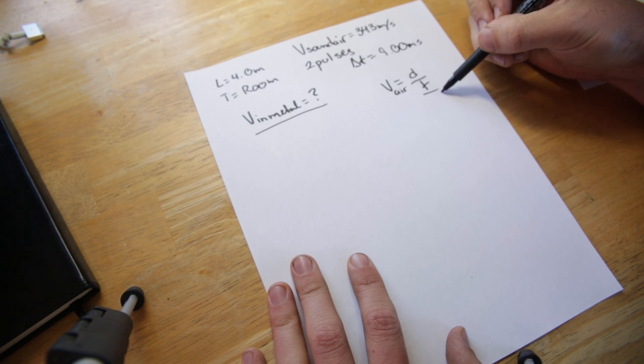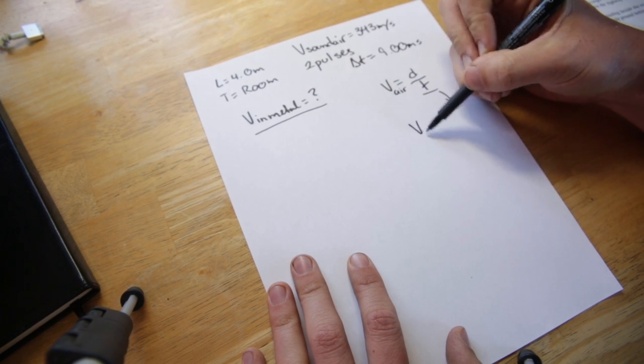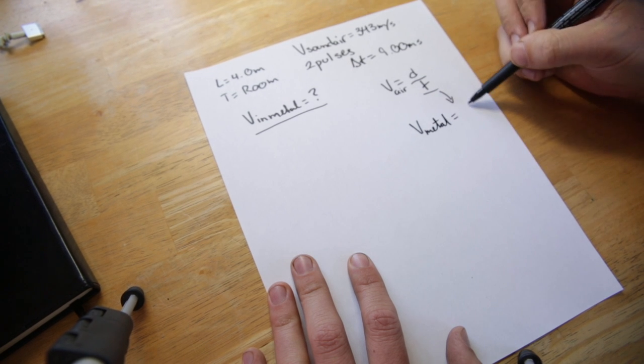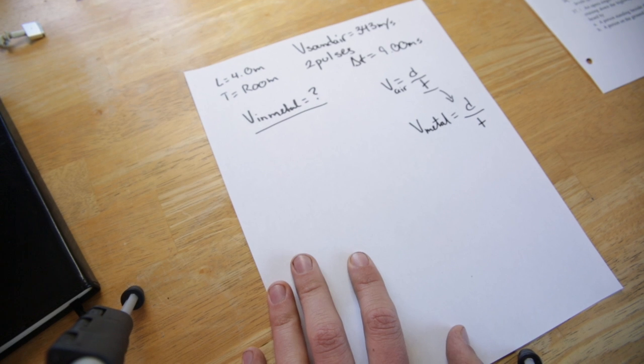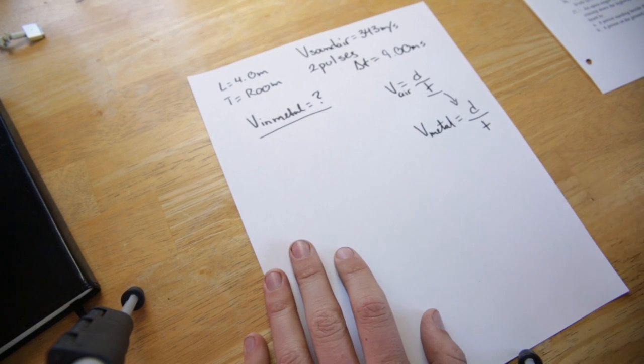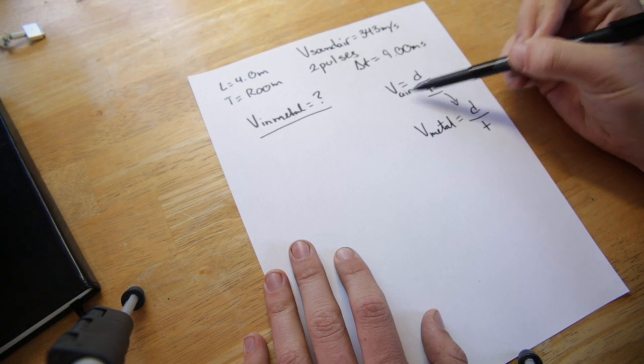Then we'll take this and plug it into velocity in metal equals distance over time. So first things first we are going to want to solve for time in the air.